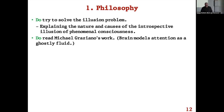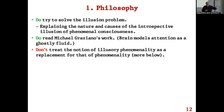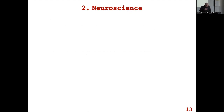I think that picture is on the right lines but needs to be vastly extended — it's not just about modeling attention but about modeling a lot more. Don't treat the notion of illusory phenomenality as a replacement for that of phenomenality. Don't think that whenever people ask questions about phenomenality you can replace it with illusory phenomenality. For instance, don't think that if someone thinks phenomenality has ethical value, you can just switch that ethical value over to the illusion of phenomenality — it doesn't work like that.